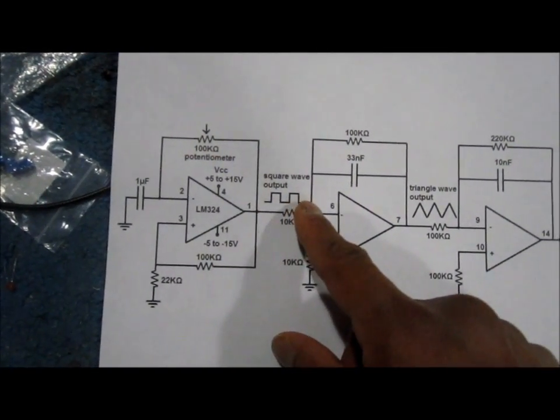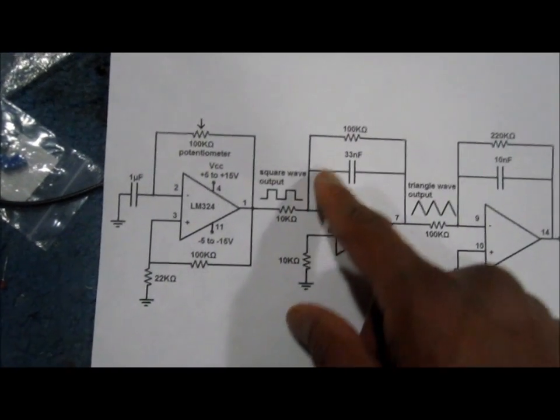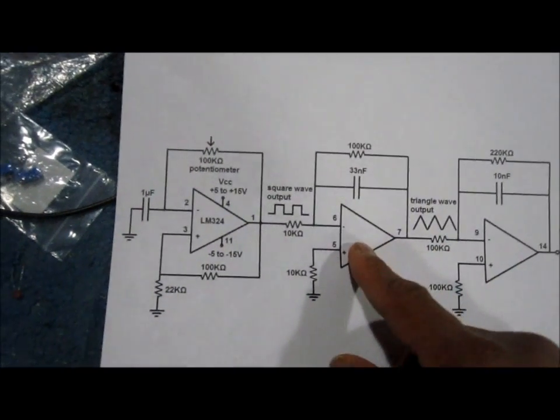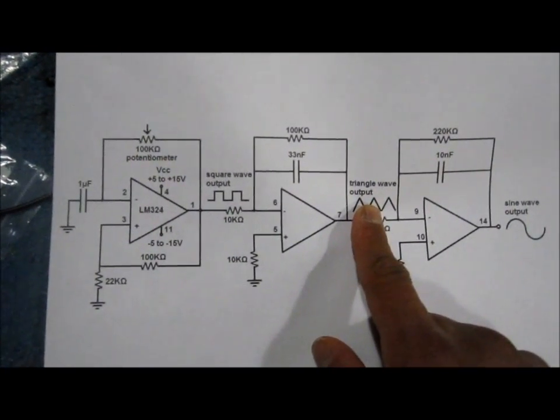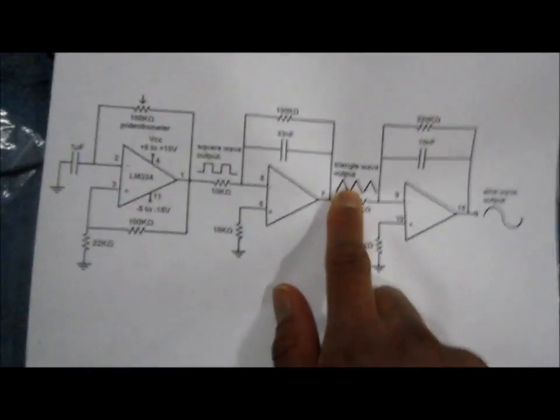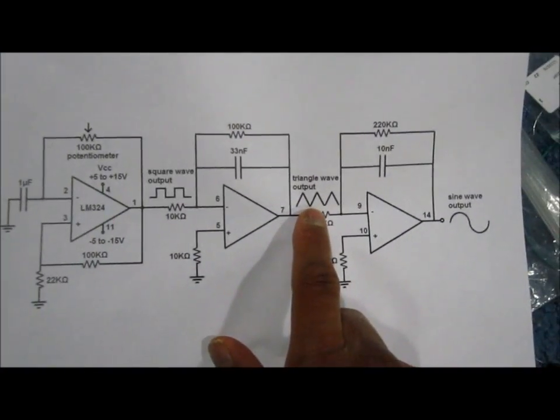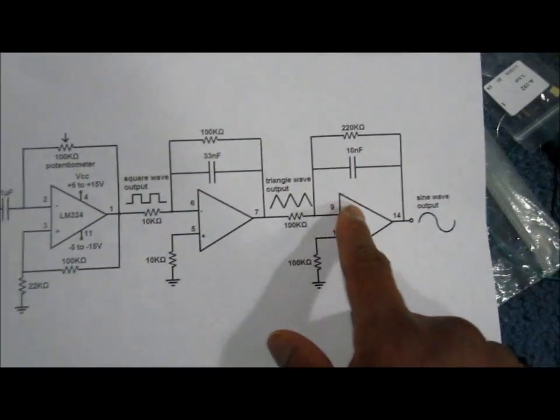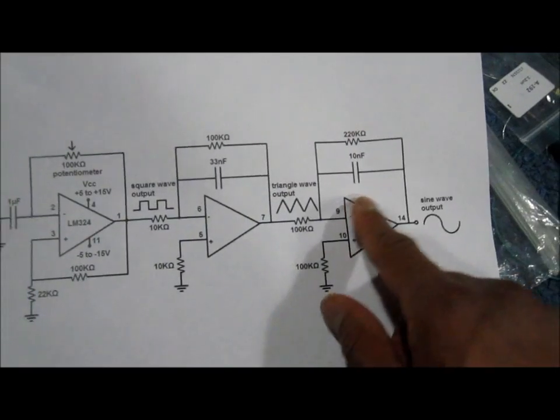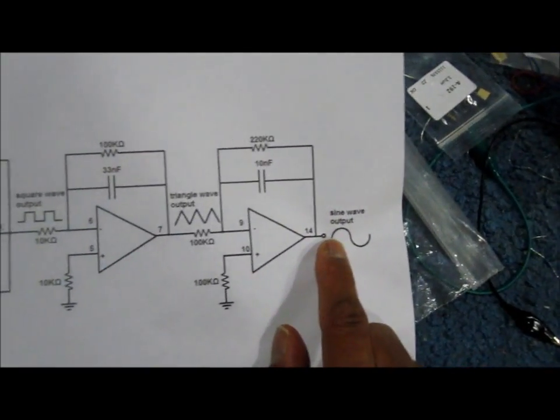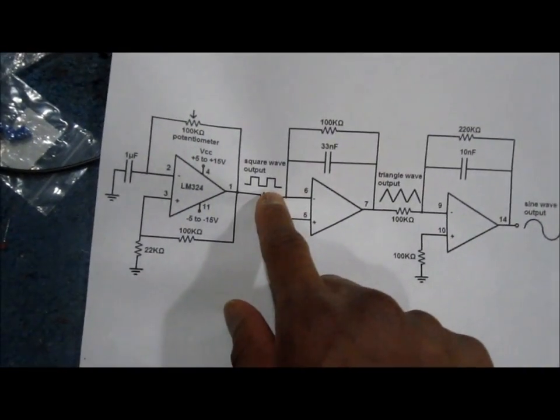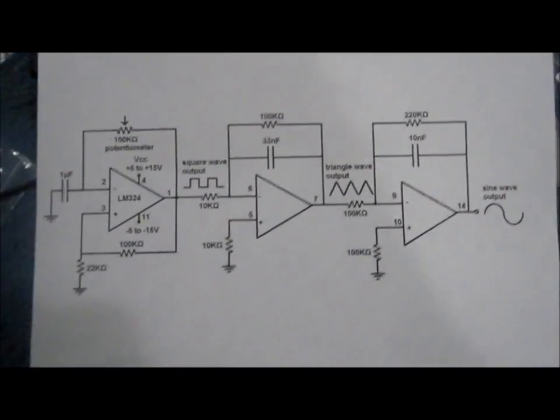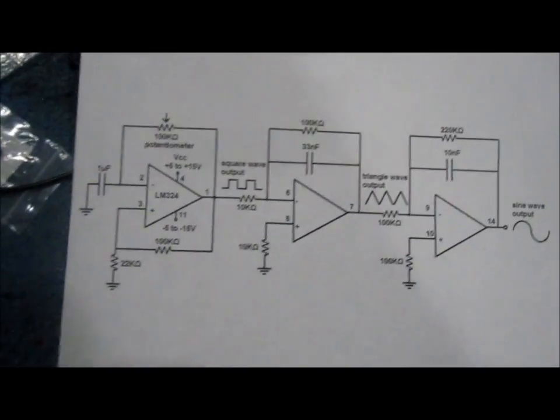After this we have a square wave, and then this right here is an integrator. When a square wave is put through the integrator, it produces a triangle waveform as output. That's what we get from the next op-amp. Then when a triangle waveform is fed into another integrator - a second integrator - it produces a sine waveform. So this is how we get square, triangle, and sine waveforms from this LM324 op-amp circuit.